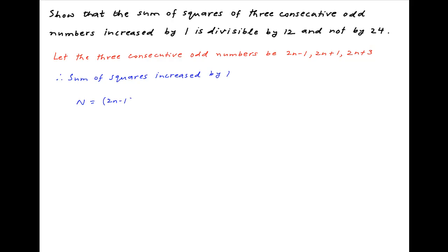N is equal to 2n minus 1 square plus 2n plus 1 square plus 2n plus 3 square plus 1.